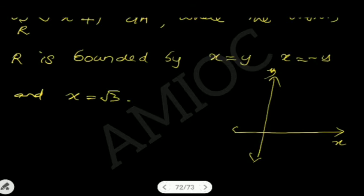The line x equals y, or y equals x, makes an angle along the positive axis. The line x equals minus y, or y equals minus x, goes in the opposite direction.